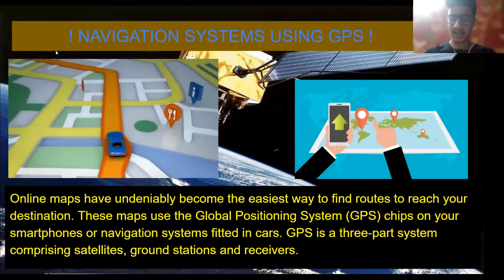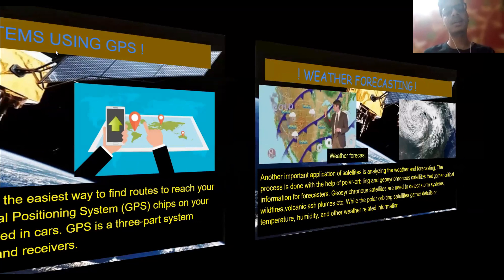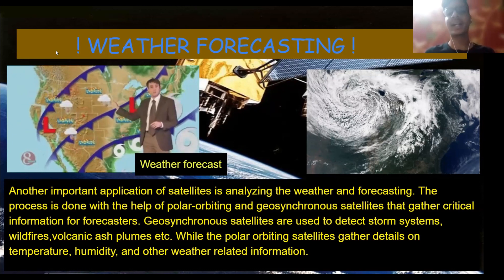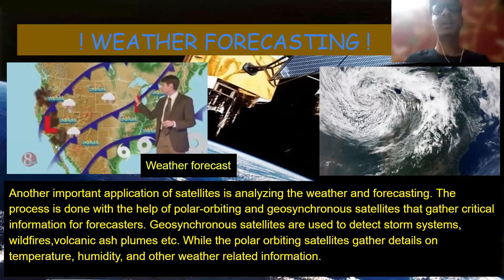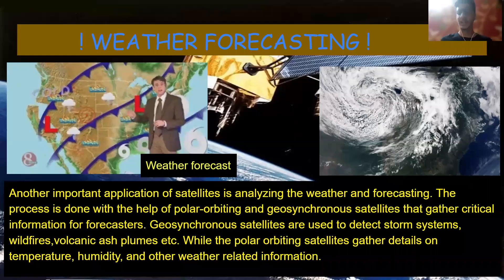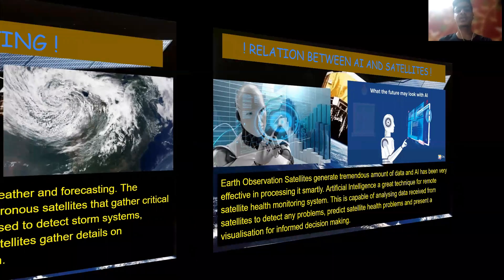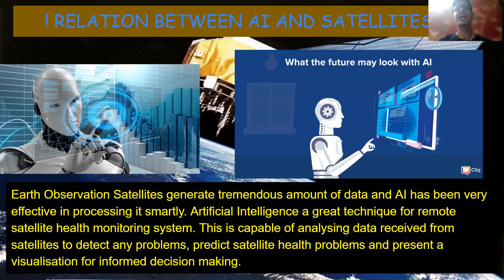Communication satellites also help us analyze and forecast weather, using geosynchronous satellites and polar orbiting satellites. Geosynchronous satellites detect storms, volcanic ash plumes, and other events, while polar orbiting satellites let us know whether the temperature outside is humid, dry, or cold. Finally, artificial intelligence is growing rapidly and helps satellites by monitoring their health systems, analyzing data, visualizing decisions, and predicting problems. By looking at all of these points, we can clearly see that satellites are helpful to us in an essential manner. Thank you.